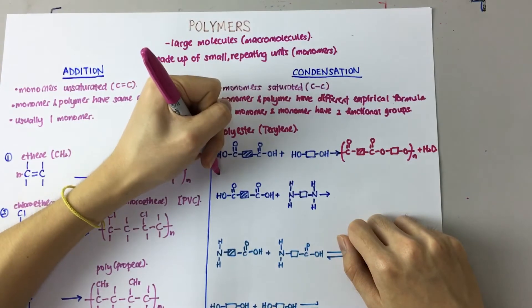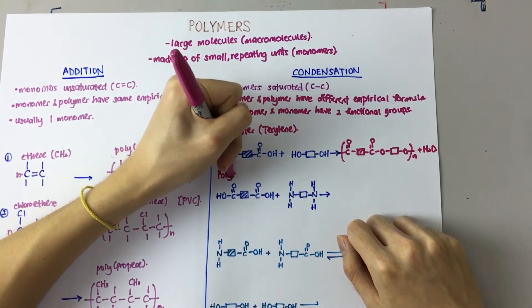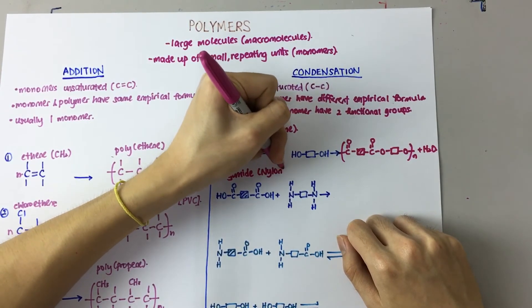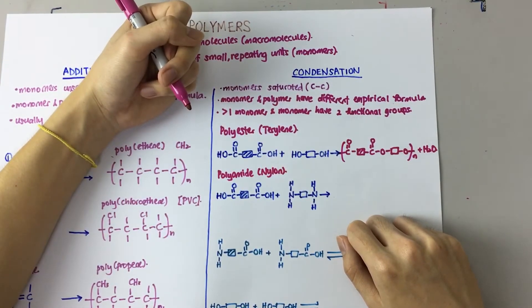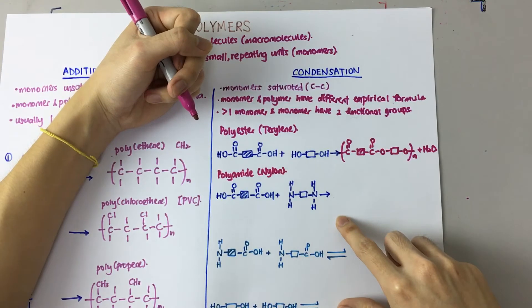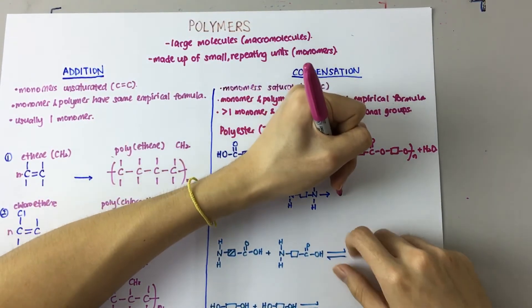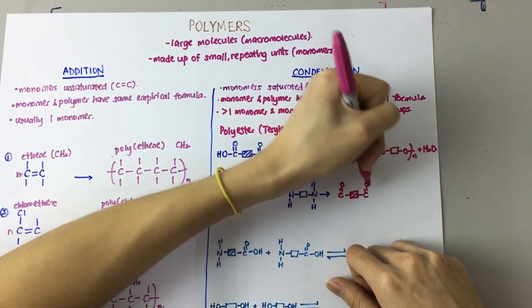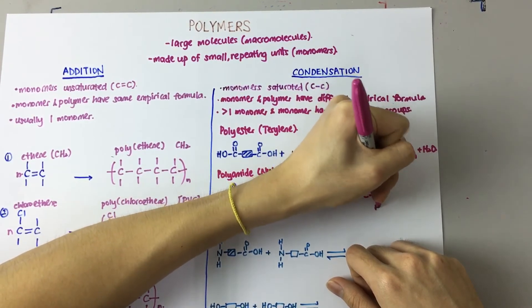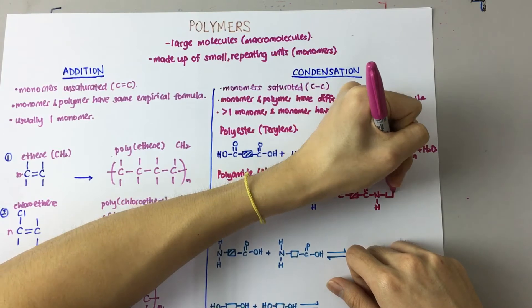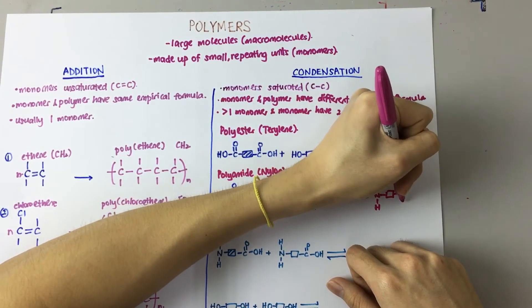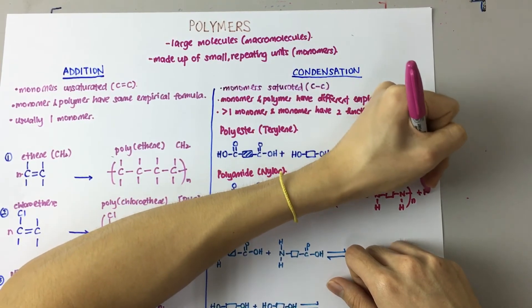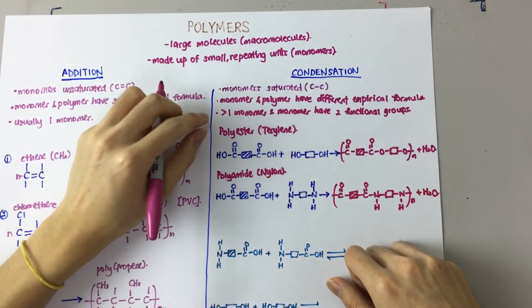Next one here is a polyamide. And the example here we look at is nylon. As usual, these are the monomers. And when it becomes a polymer, it looks something like this...